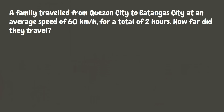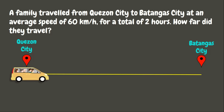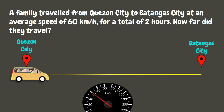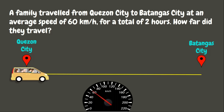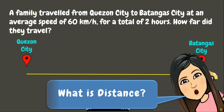Let's have our first example. A family traveled from Quezon City to Batangas City at an average speed of 60 kilometers per hour for a total of 2 hours. Now, how far did they travel? Here we are asked how far did they travel, which means we need to look for the distance.